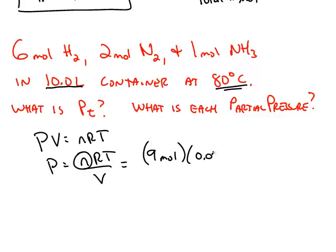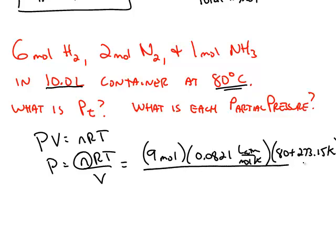So 9 moles times the gas constant. The temperature, never use degrees Celsius, convert that into Kelvin, and the total volume, 10 liters. So the total pressure works out to be just over 26 atmospheres.